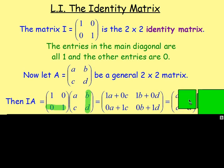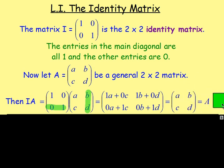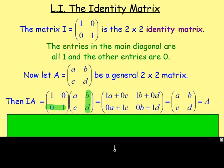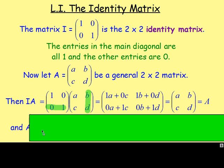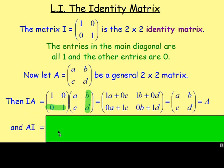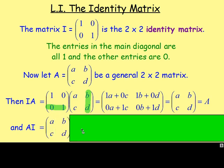Well, we end up getting back to A, B, C, D. In other words, we get back to just matrix A. Similarly, if instead we flipped that around and had matrix A multiplied by the identity matrix — so A times I — well, that would be the matrix A, B, C, D multiplied by the identity matrix.